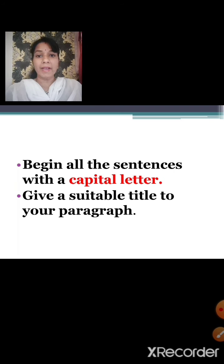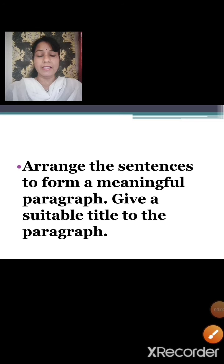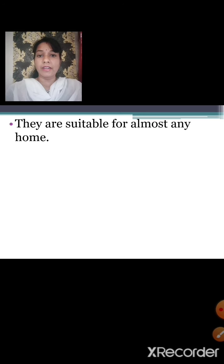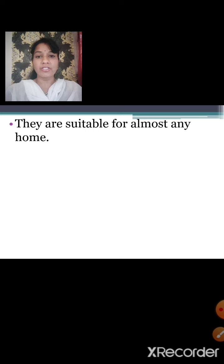Give a suitable title to your paragraph. Once you find out the topic sentence from the given sentences, it will be easy for you to find a suitable title for your paragraph. Now let us understand how to write a paragraph in a better way with the help of the following example. Arrange the sentences to form a meaningful paragraph and give a suitable title to the paragraph. You have to read all the sentences at least three times, then find out the topic sentence, and then arrange the other supporting sentences to form a meaningful paragraph.